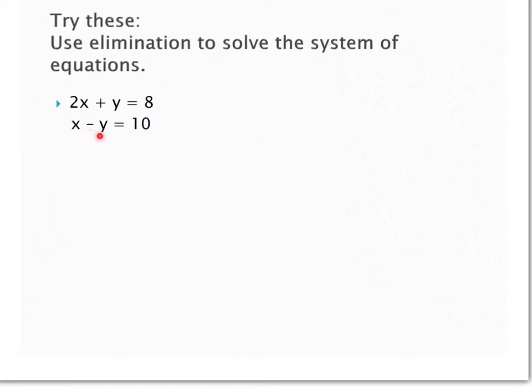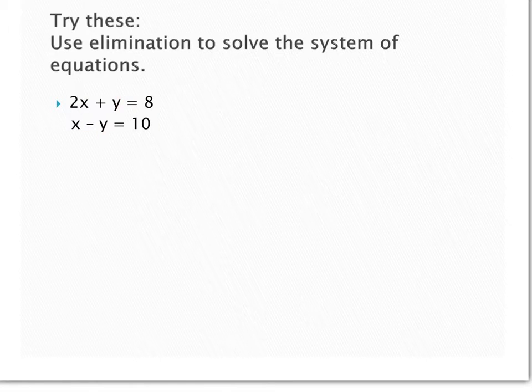In this case, we notice our y's, we have 1y and negative 1y, are going to cancel each other out when we add these two equations together. So we can add the 2x plus 1x, which gives me 3x.